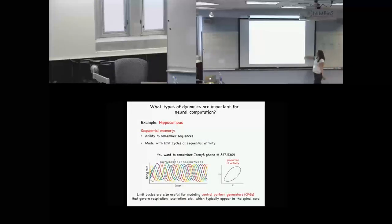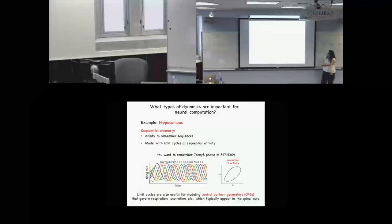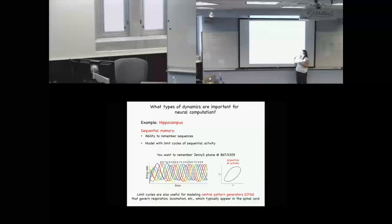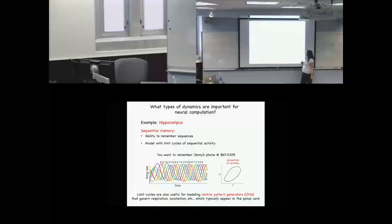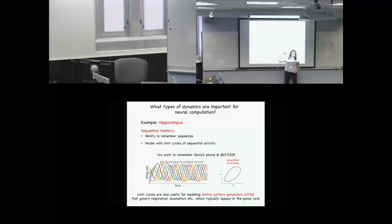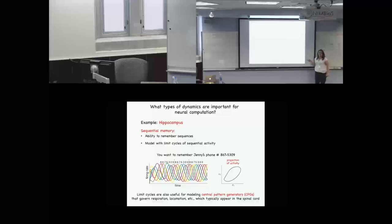The other important function is sequential memory. Suppose you're Tommy Two-Tone and you want to remember Jenny's phone number, 867-5309. You have to keep saying it over and over in your head in order to encode this memory initially. That's typically modeled with limit cycles of sequential activity.